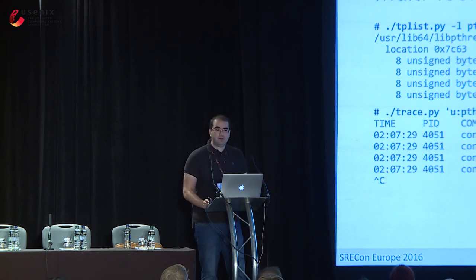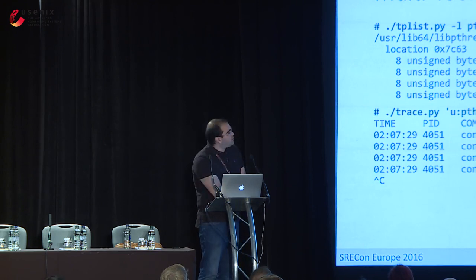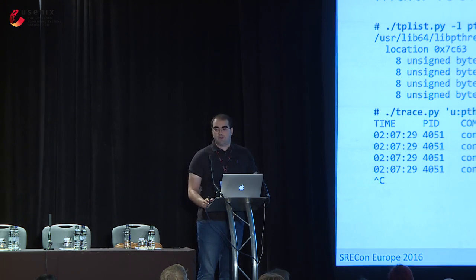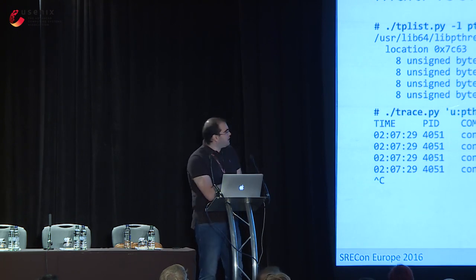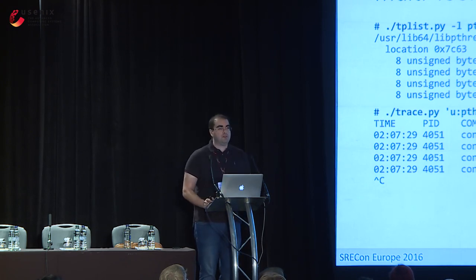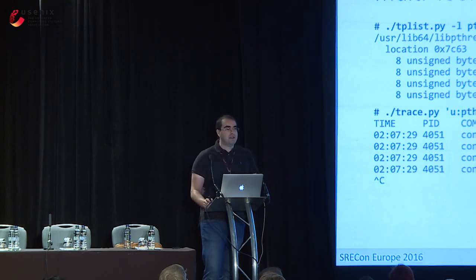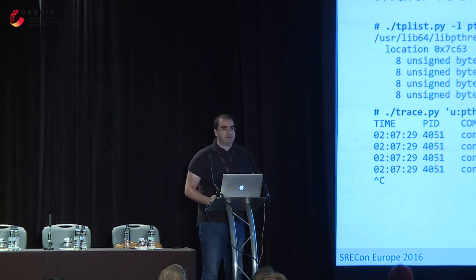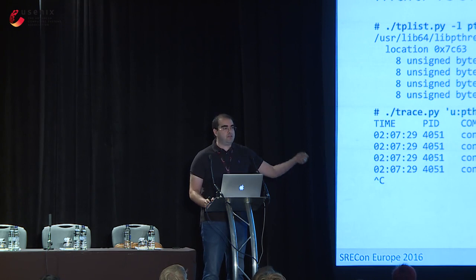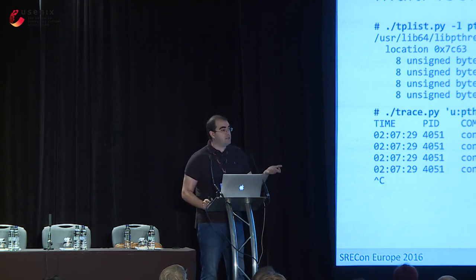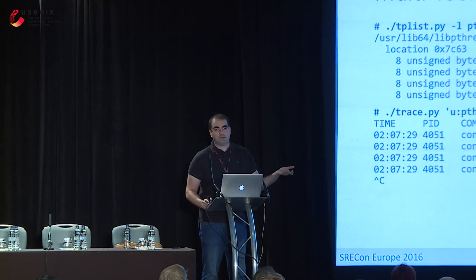For application tracing, in pthreads there's a trace point in user space called pthread_create, invoked every time someone creates a pthread. We can tell trace to trace pthread_create and print out the third argument — the start address of that thread. With a little post-processing we can convert that to a function name, so whenever a thread is started on the system we can tell you which function that thread is going to run, given debug info support.